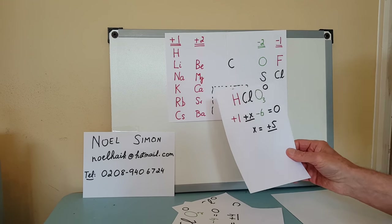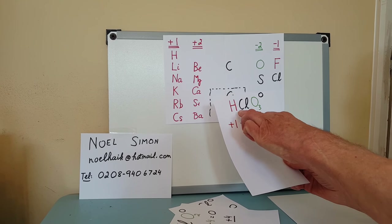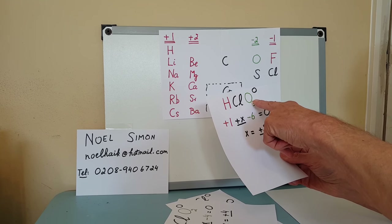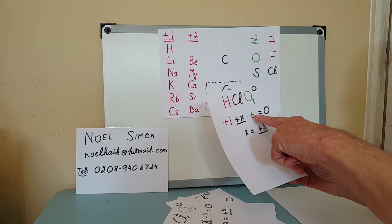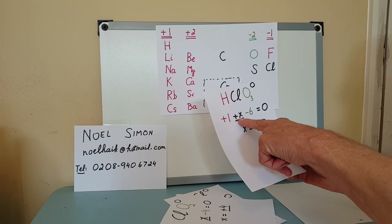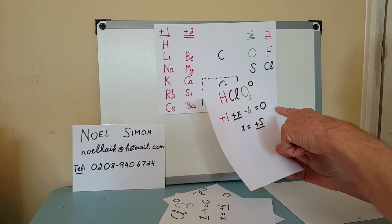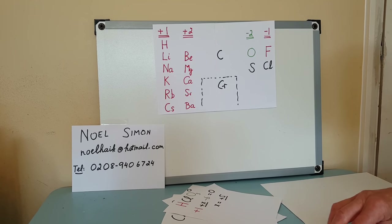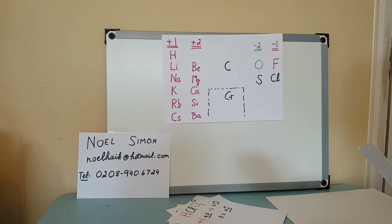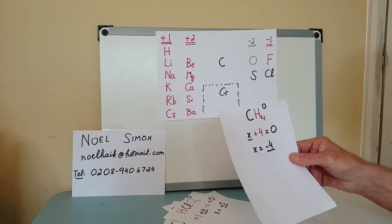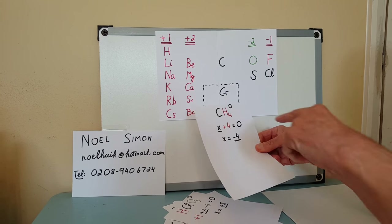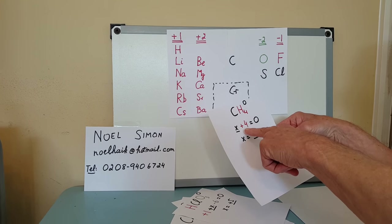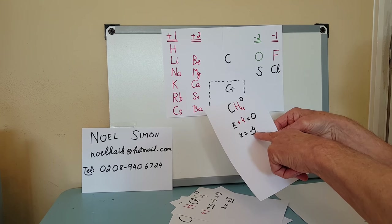Now an even more challenging one: HClO₃. Hydrogen is fixed at +1; three oxygens at −2 each give −6; chlorine is x. The equation equals zero, so x = +5. Next, let's take carbon. CH₄: hydrogen is +1; four hydrogens give +4; so carbon here (x) = −4.